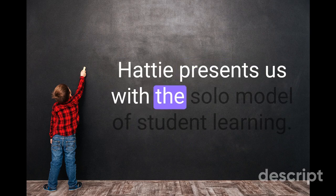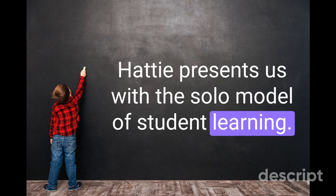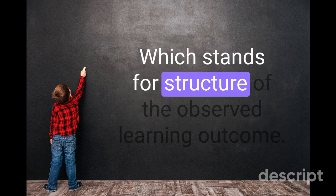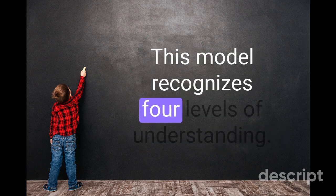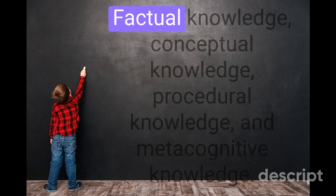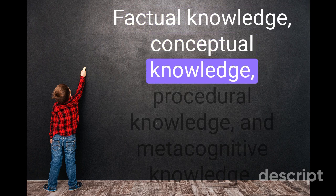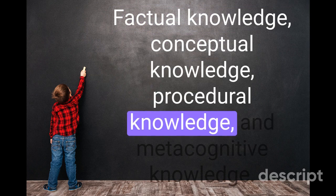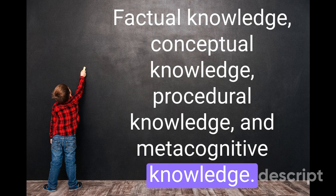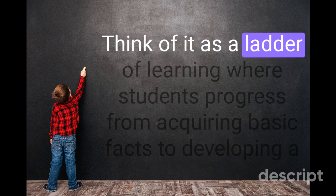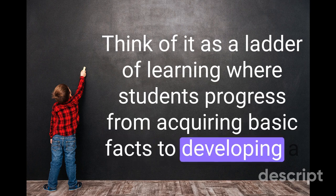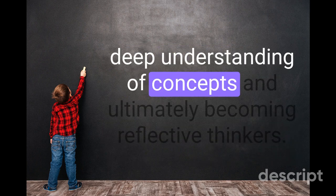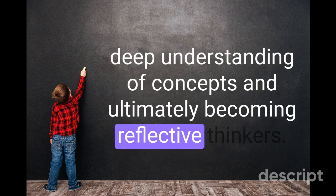Hattie presents us with the SOLO model of student learning, which stands for Structure of the Observed Learning Outcome. This model recognizes four levels of understanding: factual knowledge, conceptual knowledge, procedural knowledge, and metacognitive knowledge. Think of it as a ladder of learning where students progress from acquiring basic facts to developing a deep understanding of concepts and ultimately becoming reflective thinkers.